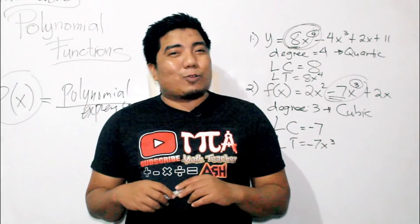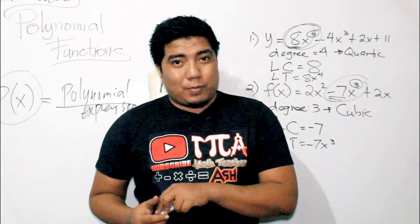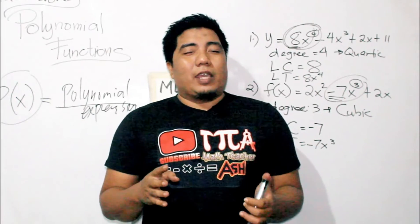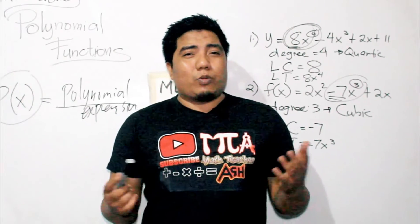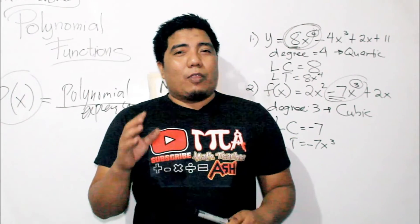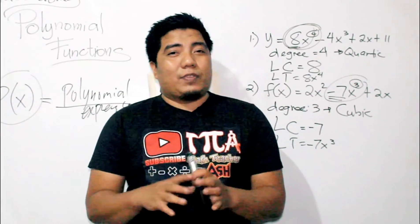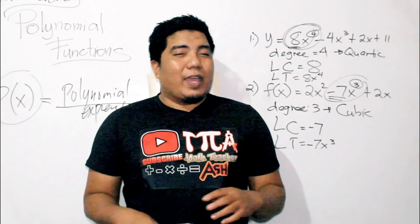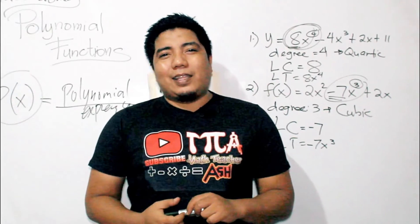In learning how to illustrate polynomial functions, first you need to know that the given is a polynomial. To determine this, you check the 4 constraints — if they are committed, then that is not a polynomial, and you don't need to name the leading coefficient or polynomial function type. But if it is a polynomial, then you find the degree, which tells you the type of polynomial function, and you can also identify the leading term and leading coefficient.